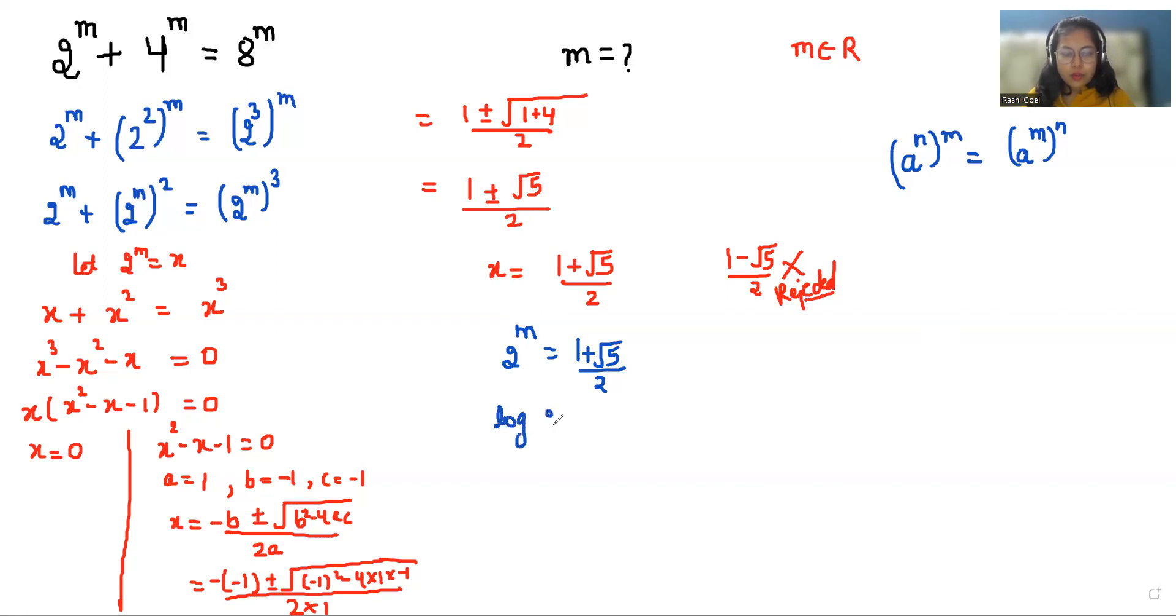So here we can use the property log(a^b) = b·log(a). Taking log both sides: m·log 2 = log((1 + √5)/2). Here we take the same base, so log base a of a equals 1.